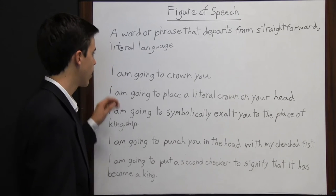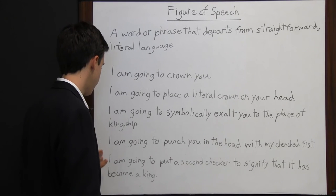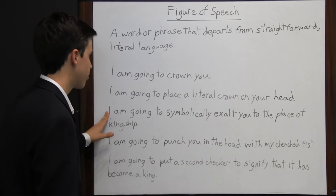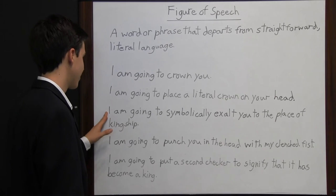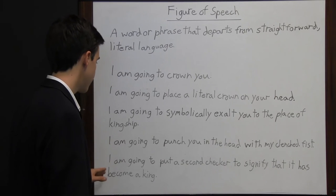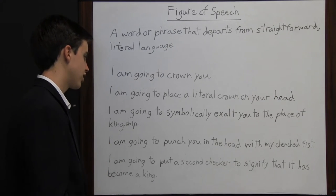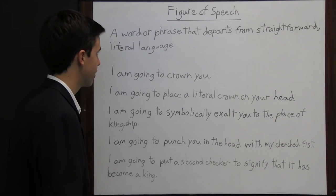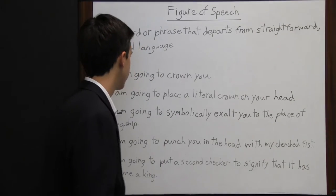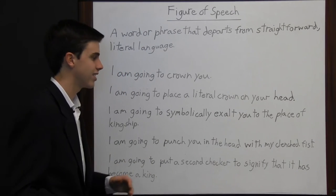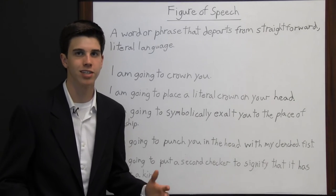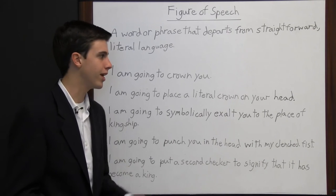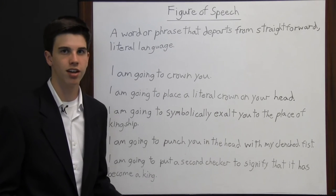Look at this sentence: "I'm going to crown you." That could have four different possible meanings: I'm going to place a literal crown on your head; I'm going to symbolically exalt you to the place of kingship; I'm going to punch you in the head with my clenched fist; or I'm going to put a second checker to signify that it has become a king. "I'm going to crown you" is a figure of speech because it departs from straightforward, literal language — there are several possible meanings, and the reader has to determine the meaning from the context around it.